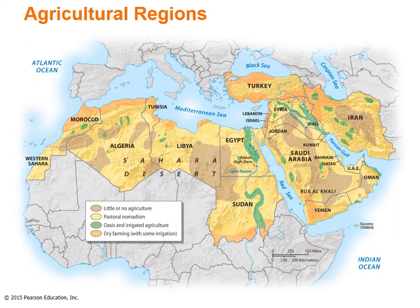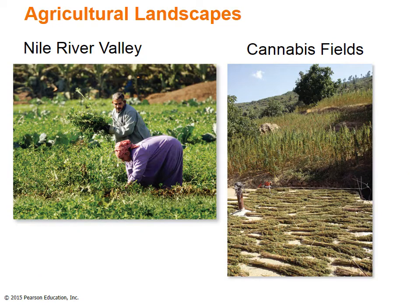The map shows the agricultural areas in the region, where pastoral nomadism is more widely practiced than any other agricultural system. The Nile River is particularly important to Egypt and Sudan. Farmers in the Nile River Valley pull clover for animal feed from irrigated fields north of Cairo. A cannabis field in Morocco also appears — bundles of processed hash drying near Ketama, with much of the region's hashish crop bound for Europe.